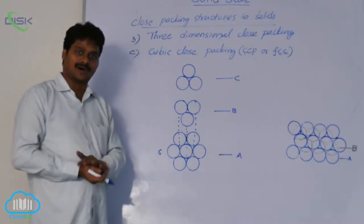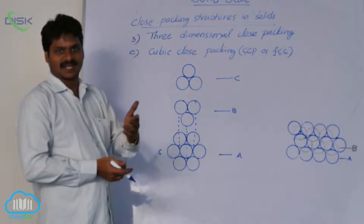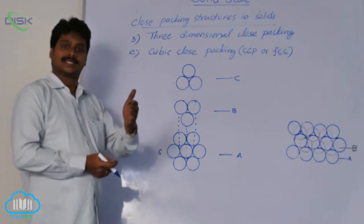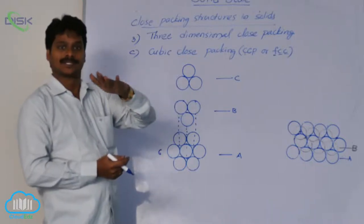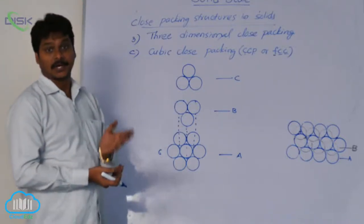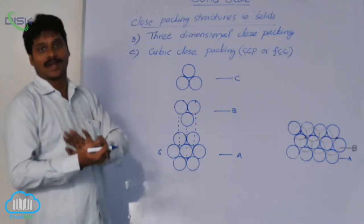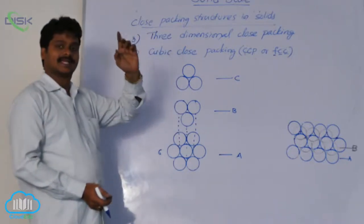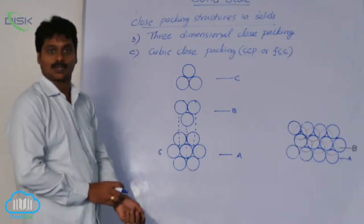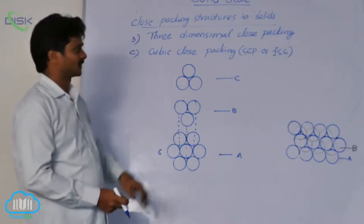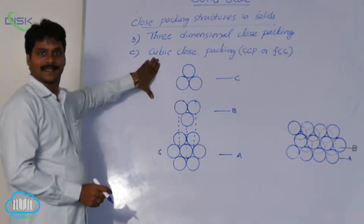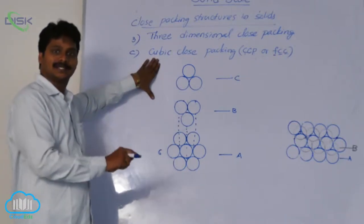How is HCP formed? In three-dimensional packing, when the third layer is placed over the second layer such that the spheres of the third layer occupy the tetrahedral voids, then HCP — Hexagonal Closed Packing — is formed. How is Cubic Closed Packing formed? It differs only in the arrangement of the third layer.